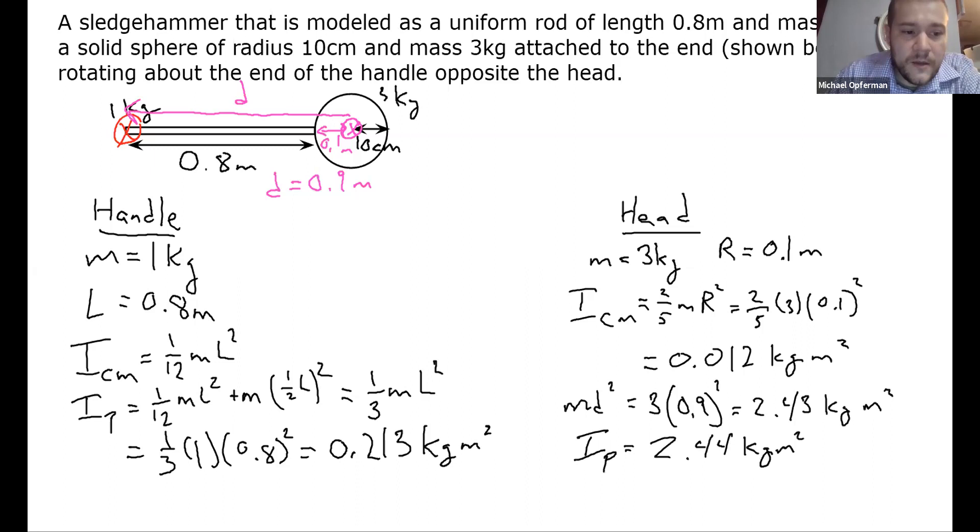And then finally, the total moment of inertia of the whole object is just going to be the two added together. So the total is going to be 0.213 plus 2.44, and that's 2.65.